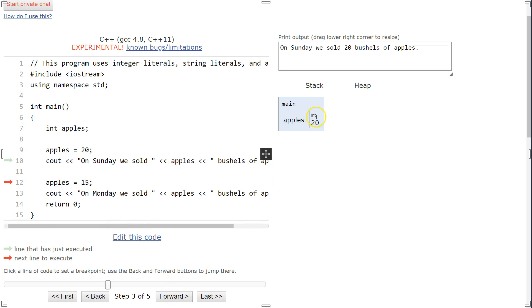Now we're redefining. It's 20 right now. Now the computer sees that it's 15. Still an integer. Here we go. On Monday, we sold 15 bushes of apples. So now see how it changed it up. And then that's the end of our program.